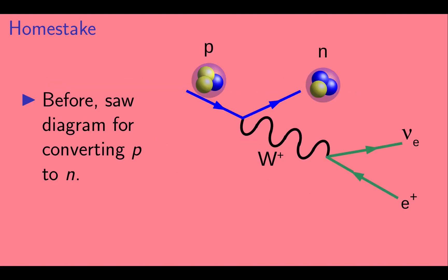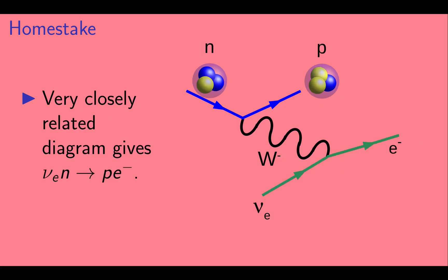Before, we saw a diagram where a proton turns into a neutron via a W-plus boson. The neutrino interaction at Homestake went through a very similar diagram, where a neutron turned into a proton via a W-minus boson.